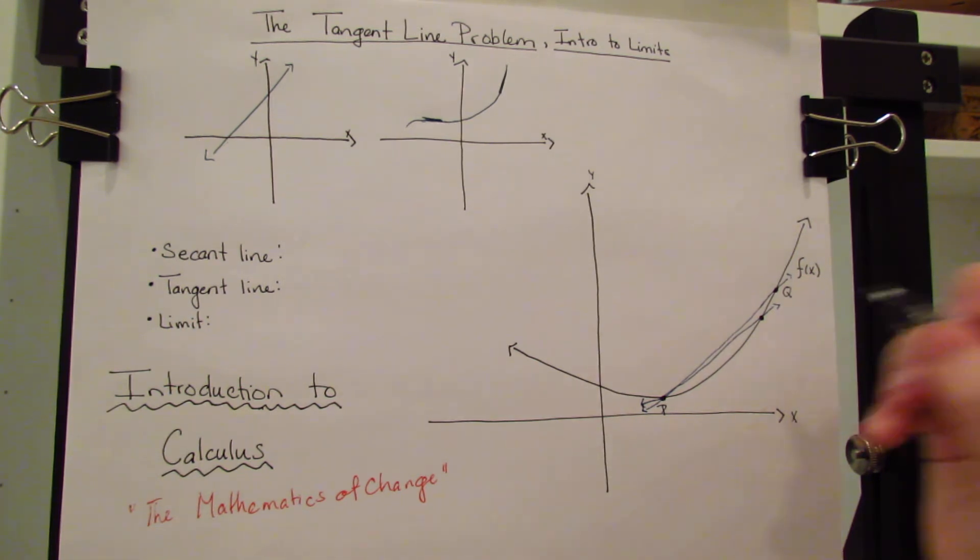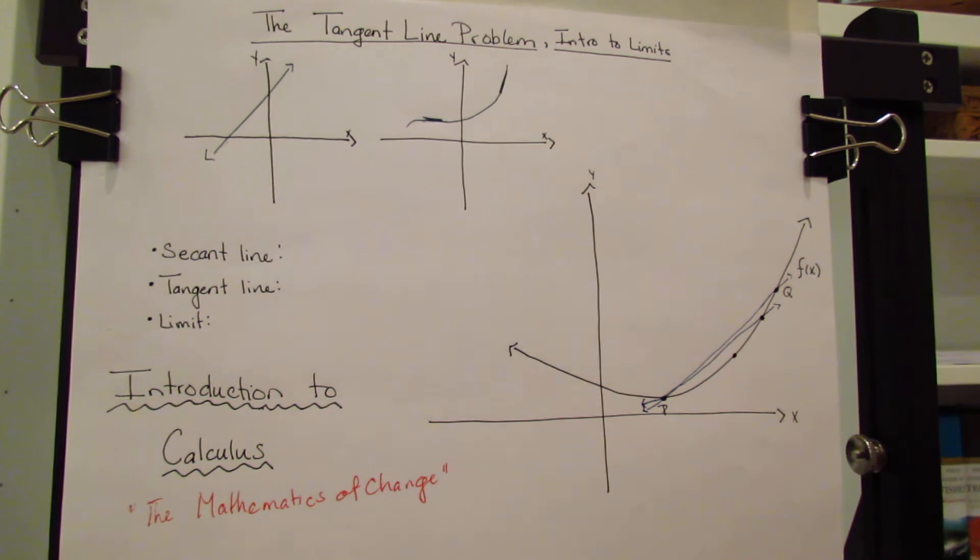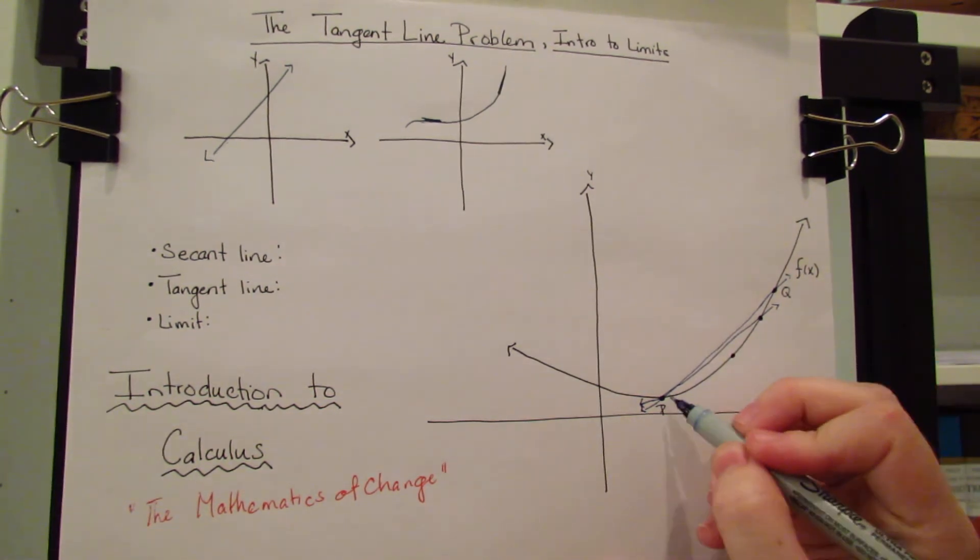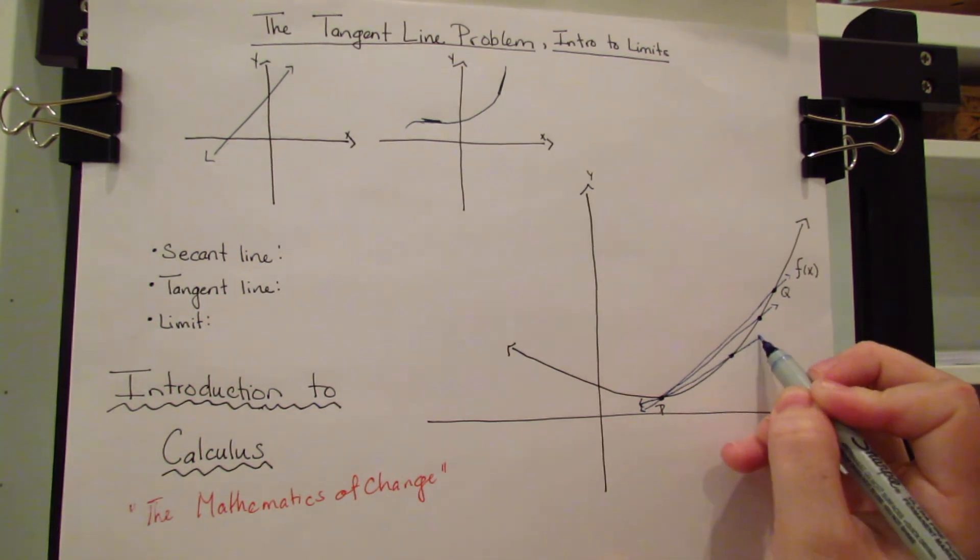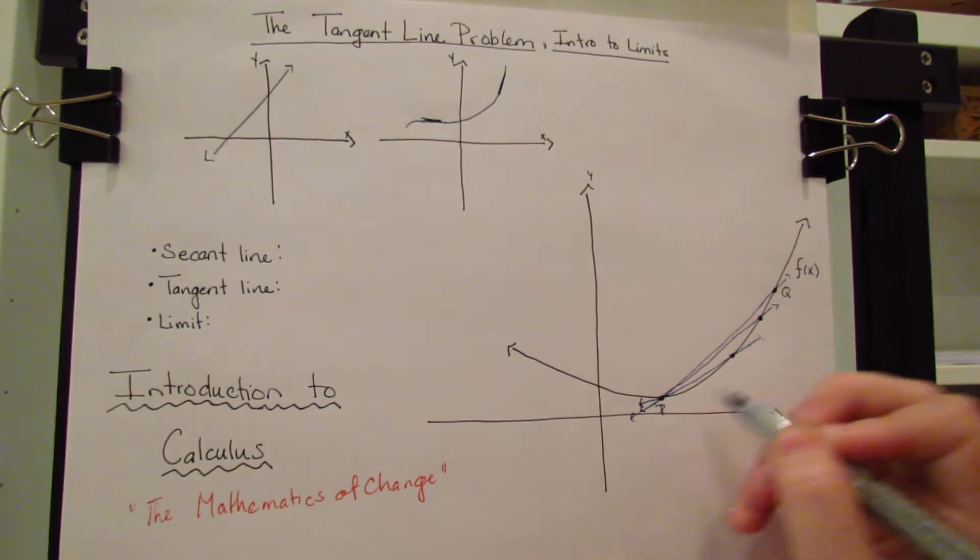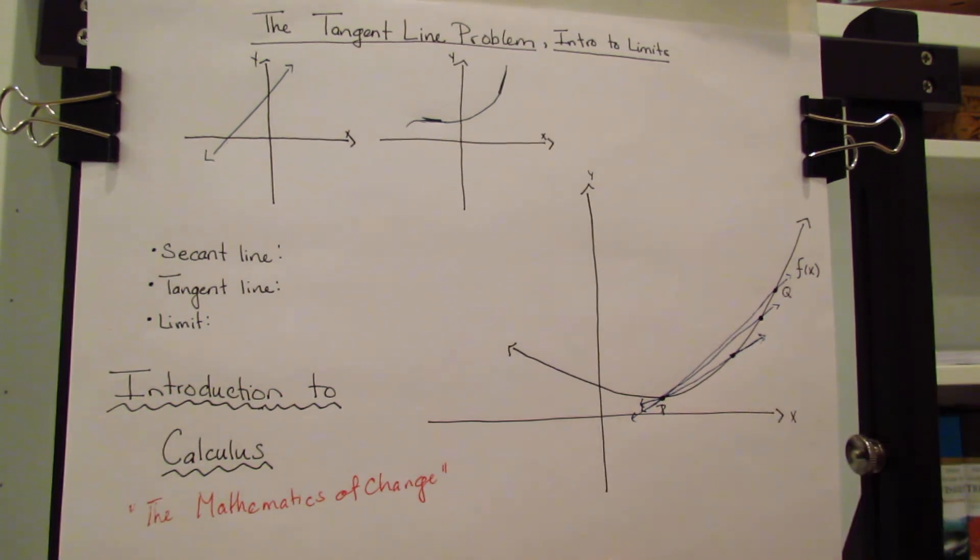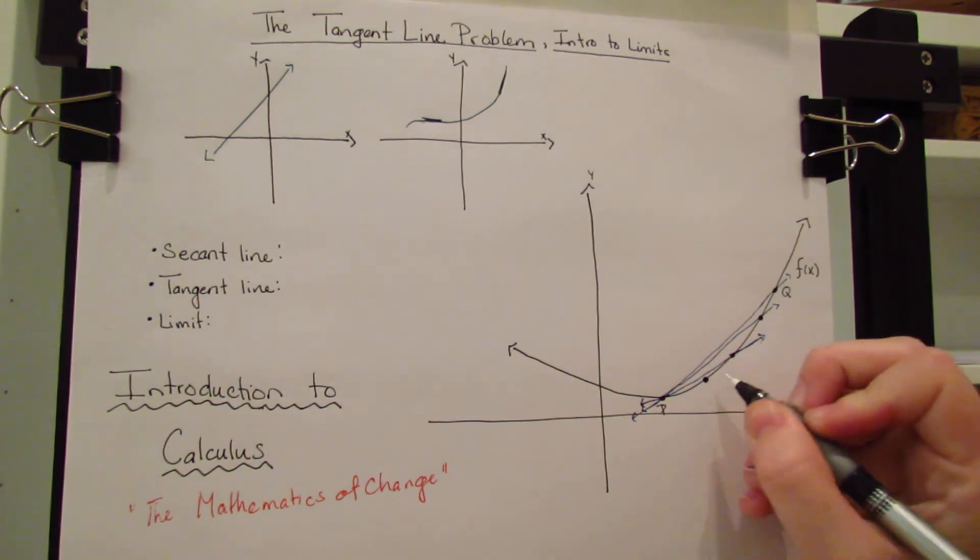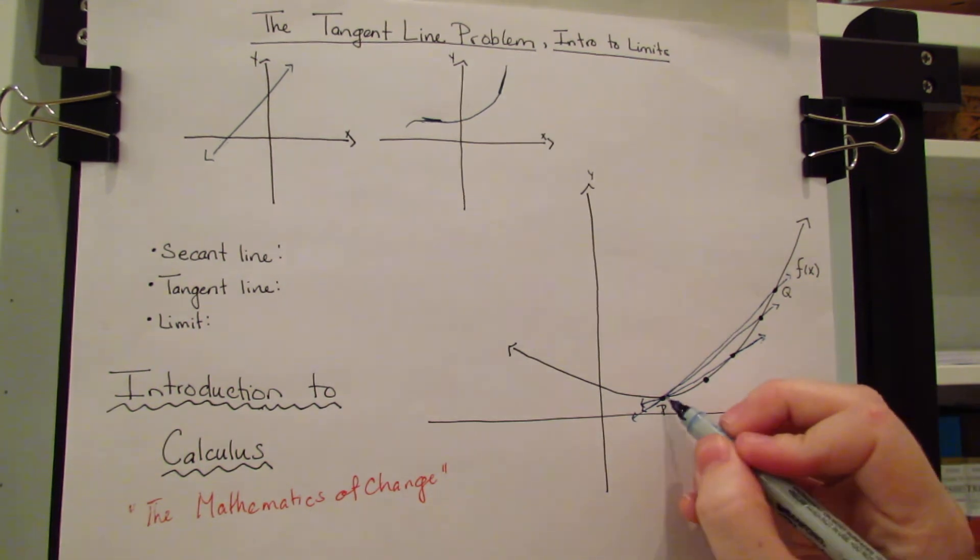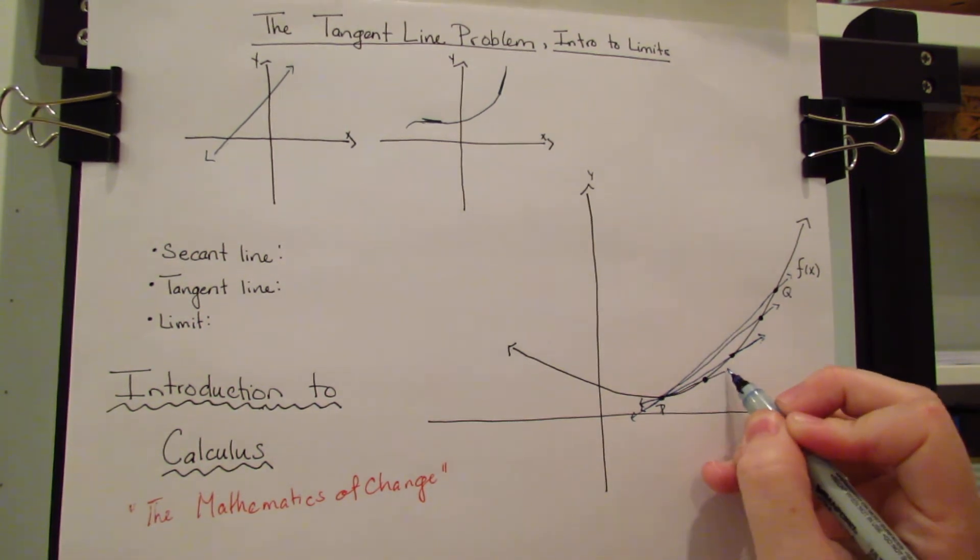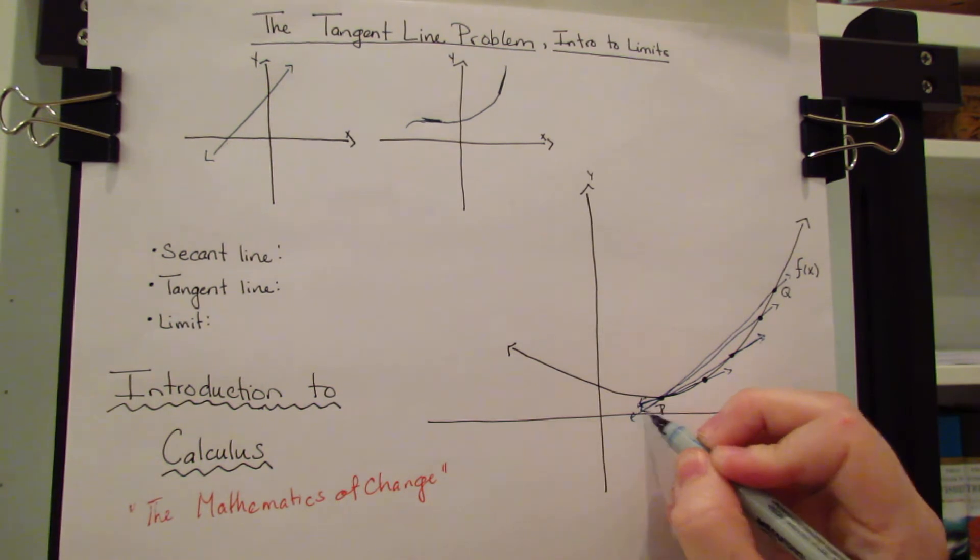Let's move it a little bit closer. Move it down here. We draw another line. Now, this line is even closer to the actual slope of P. And as we move Q closer and closer to P, we get closer and closer to the actual value of P.